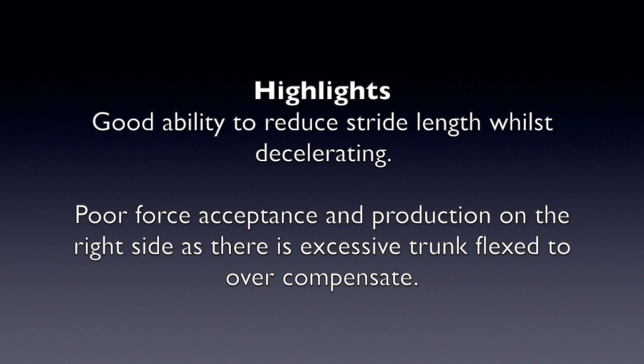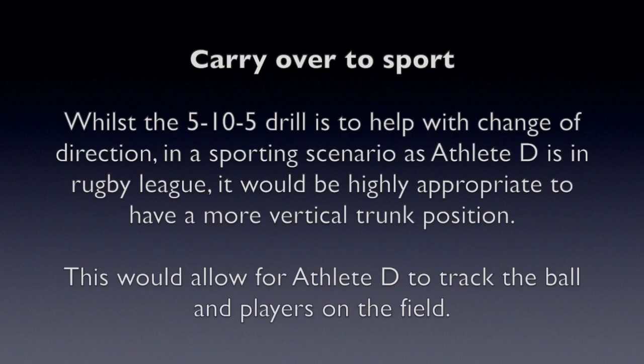However, poor force acceptance and production uses trunk flexion to overcompensate. As Athlete D is a professional rugby league player, the athlete requires a more upright trunk posture which would enable him to react and track changes occurring on the sports field.